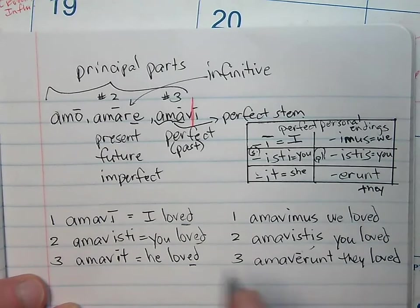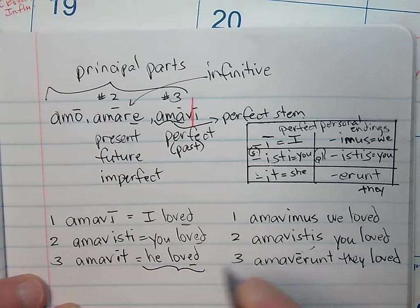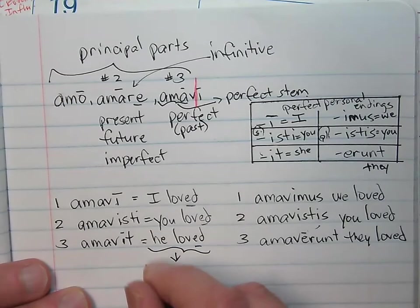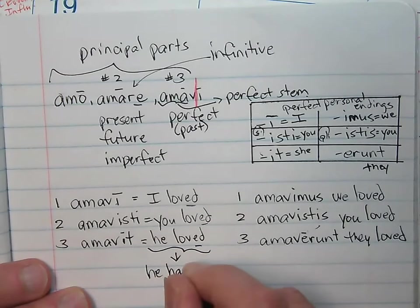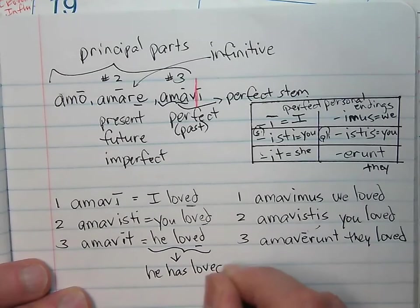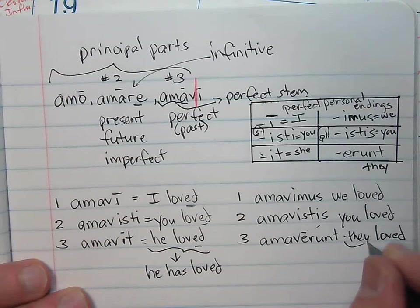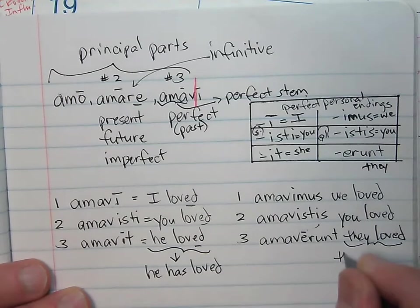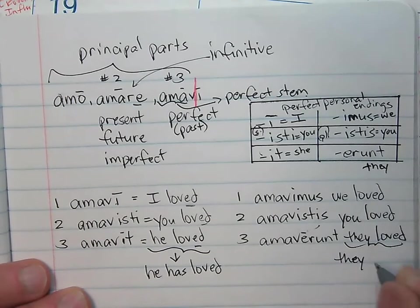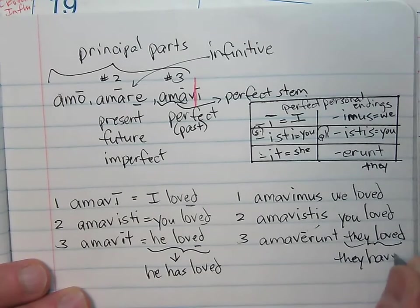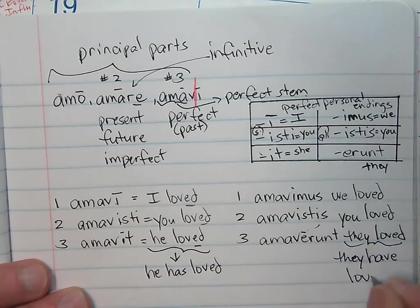We loved, you loved, and they loved. Now, because you're a Latin 3 honors, I will tell you there is an alternative to these six translations. Instead of saying he loved, you could say he has loved. Instead of saying they loved, you could say they have loved.